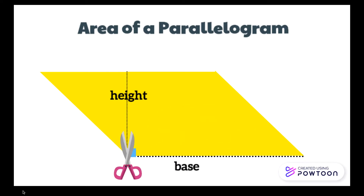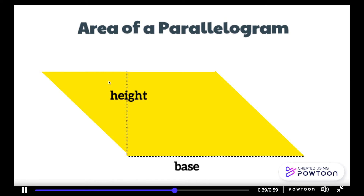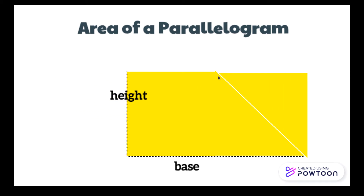Now, I am going to cut along the height to move this triangle to the other side. Let's see what happens. Slide to the right — voila! I have a rectangle. Then, I can use the rectangle area formula for parallelograms.